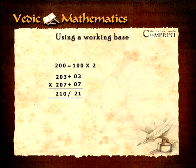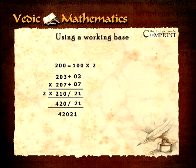Finally, we take the number which is used to obtain the working base from the real base, that is 2, and multiply the left hand part of the answer by that 2 to give 420. The right hand part of the answer is left alone and so the final answer is 42,021.